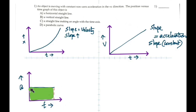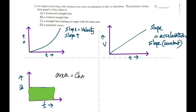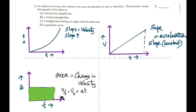Remember, the area is always the product of the two axes. The product of acceleration and time — it's not velocity, but you're very close. It's the change in velocity: final minus initial. The area of the acceleration-time graph gives you change in velocity because of the equation: change in velocity equals A times T.